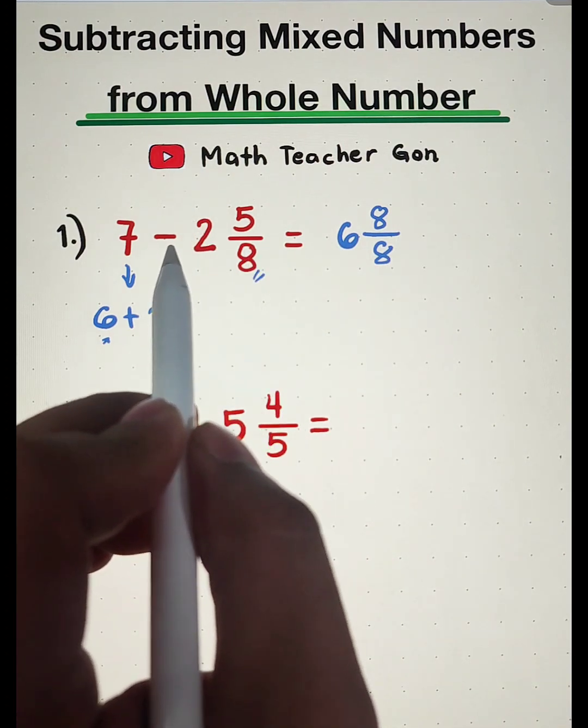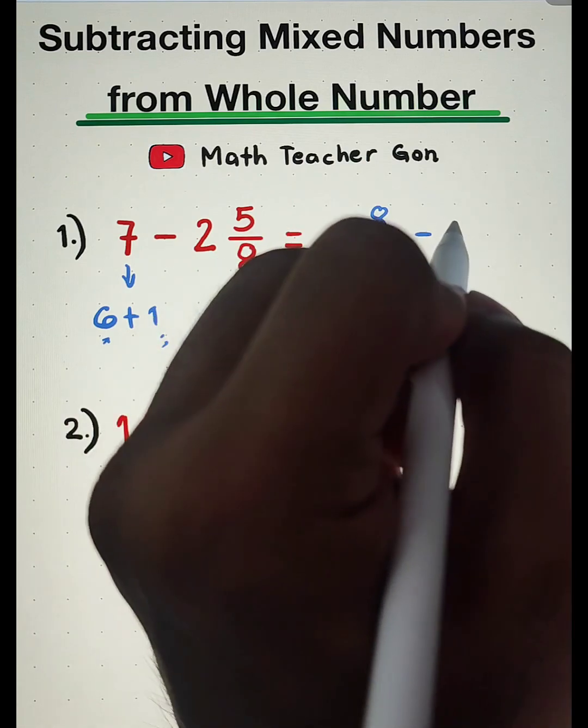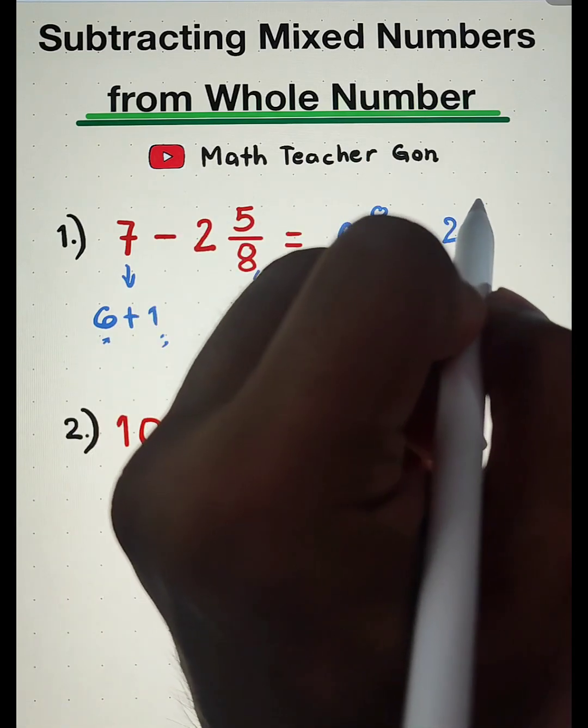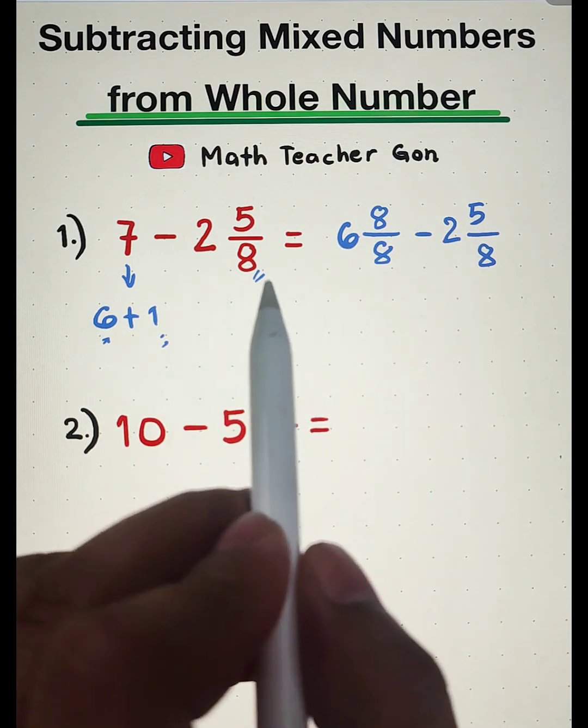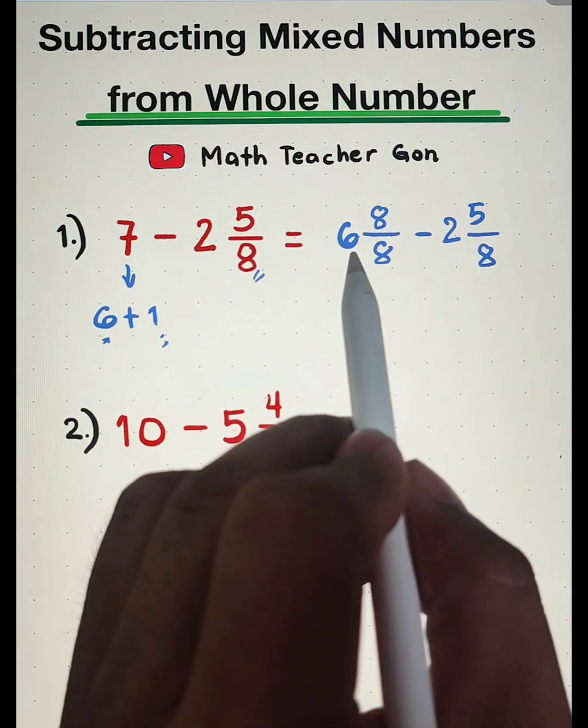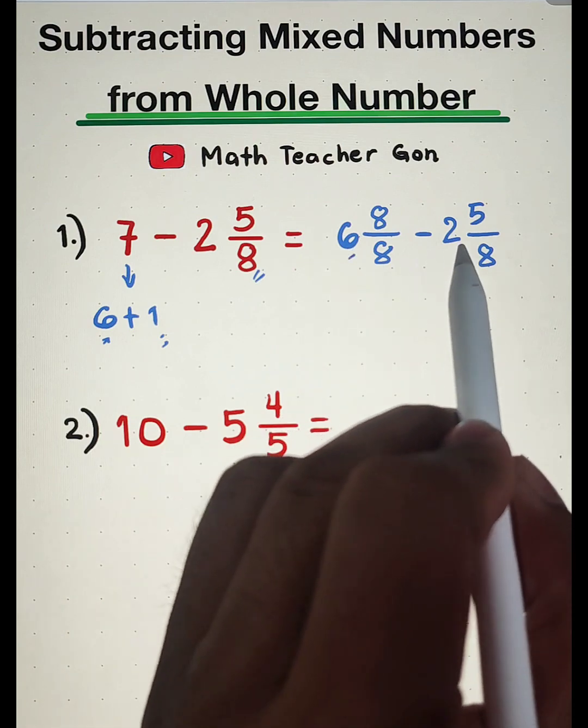So in this case, you can copy this minus 2 and 5 over 8. As you can see, we can directly subtract the whole numbers, 6 minus 2, that is equal to 4.